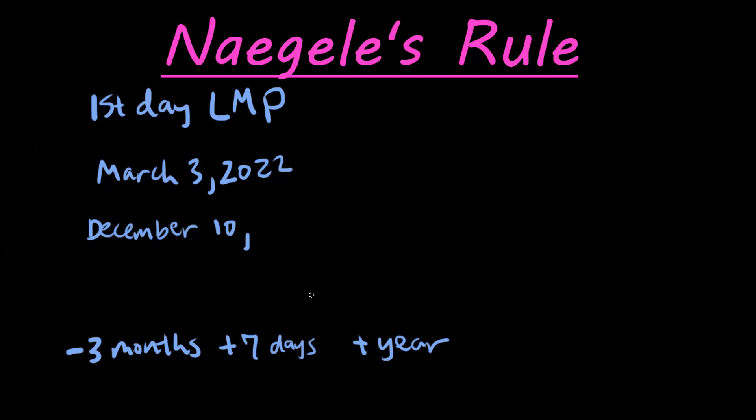To figure out the year, sometimes you will have to add a year — it depends. In this case we don't, because the average pregnancy is about 40 weeks. It would make sense that this would be 2022 and not 2023, because that would make the pregnancy longer than a year. So December 10th, 2022 is the estimated delivery date if the first day of the last menstrual period was March 3, 2022.